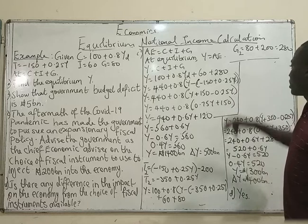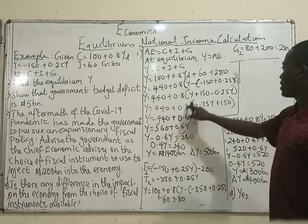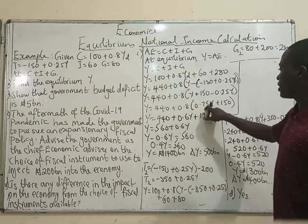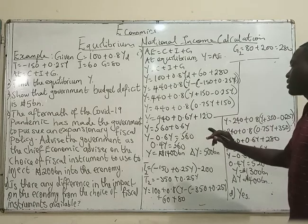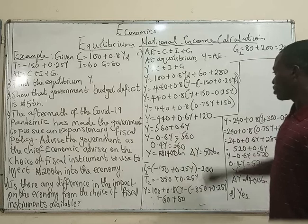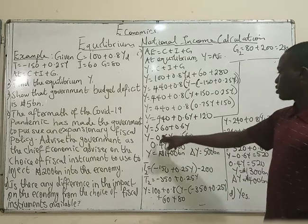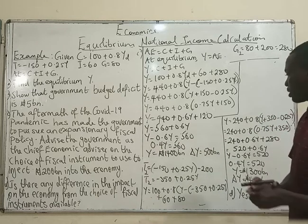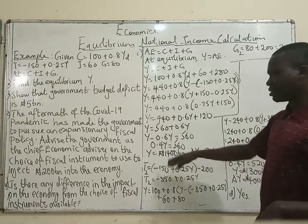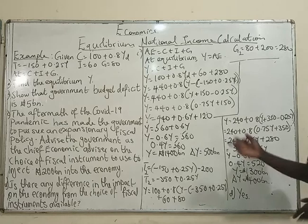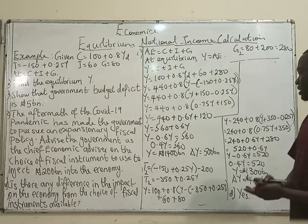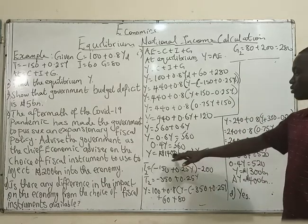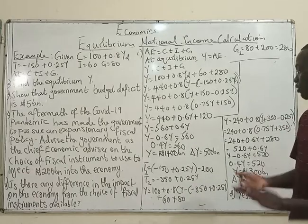So we have 440 plus 0.8 times bracket plus 150 minus 0.25Y, which gives 440 plus 0.6Y plus 120. Adding constants: 440 plus 120 is 560, so Y equals 560 plus 0.6Y. Collecting like terms: Y minus 0.6Y equals 560, so 0.4Y equals 560, therefore Y equals 1,400 billion. The change in Y is 1,400 minus 900 equals 500 billion.